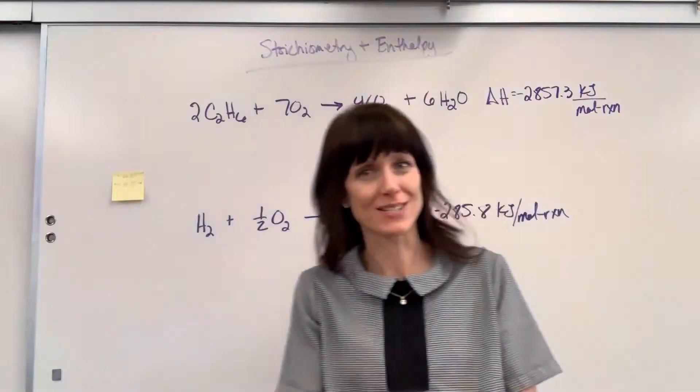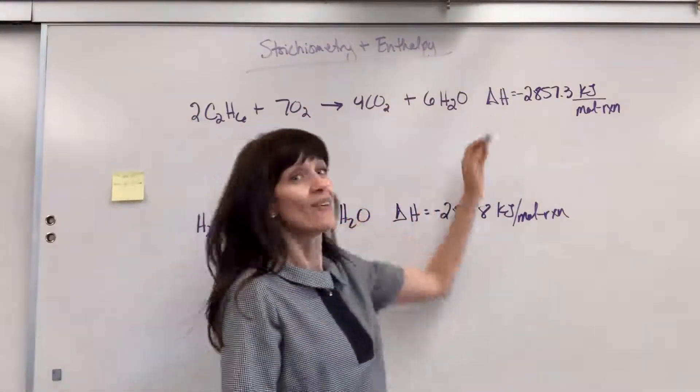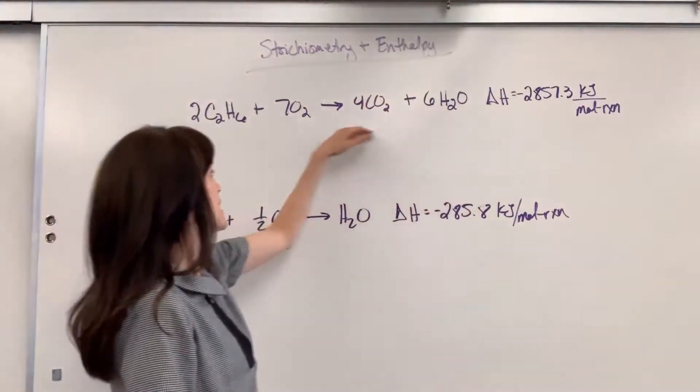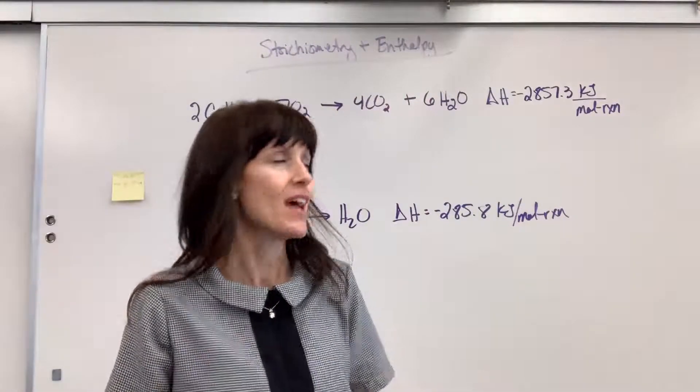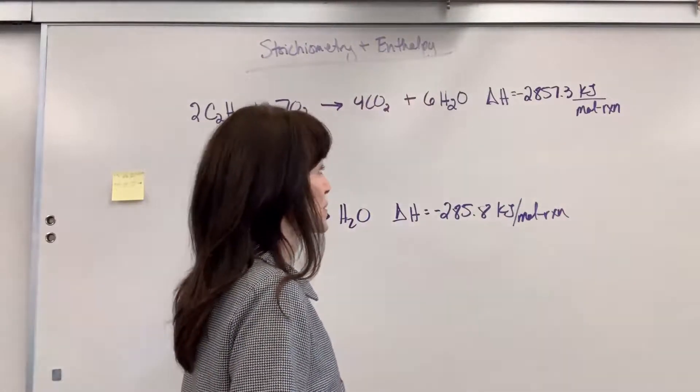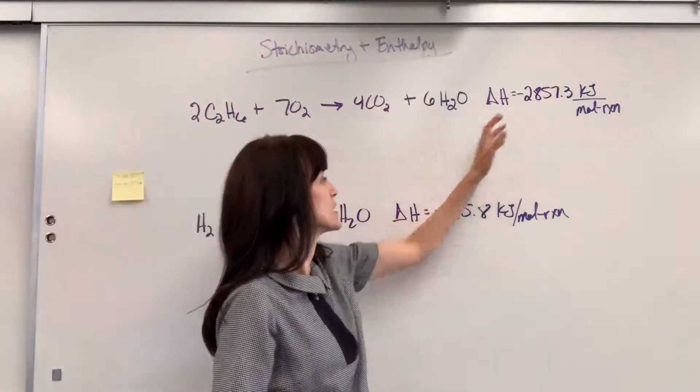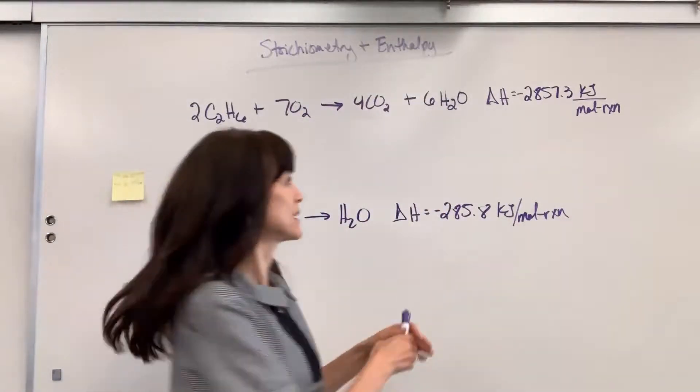There's something super special right here. So we have a chemical reaction with a delta H next to it. When you put enthalpy next to a chemical reaction, that is called a thermochemical equation. And what this tells us is the amount of energy that's released from this reaction.